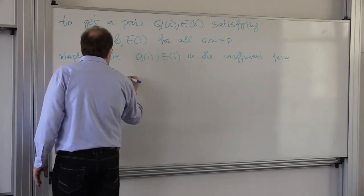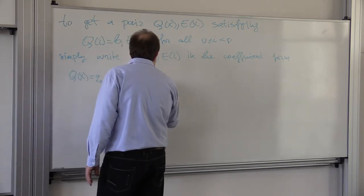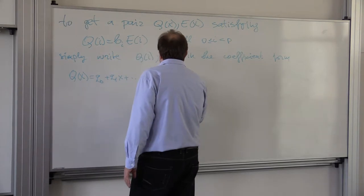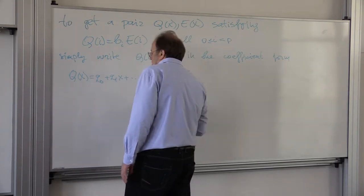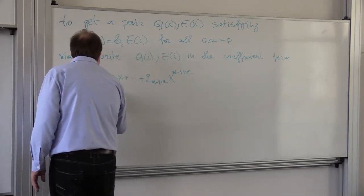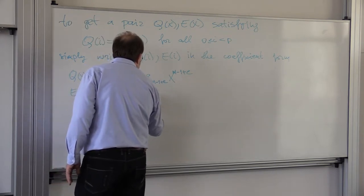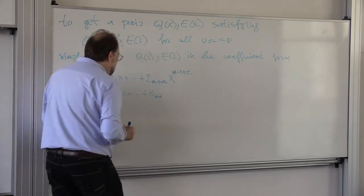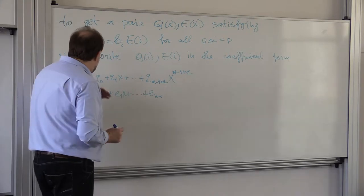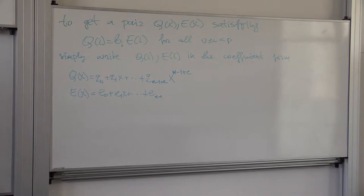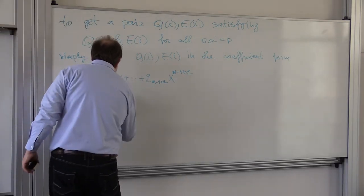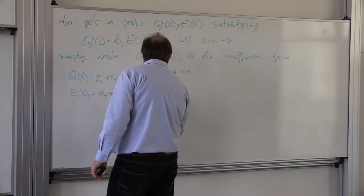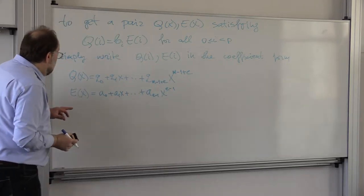0 plus q1x plus q, what is it, m minus 1 plus e times x to the m minus 1 plus e, and write e of x as e0 plus e1x plus plus e. Now it's e and e, e minus 1. Where this e refers to maximum number of, oh gosh, let me use another letter. Let me use a. So e of x is a0 plus a1x plus dot dot plus a e minus 1 x to the e minus 1. And now, simply substitute.